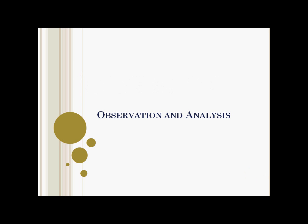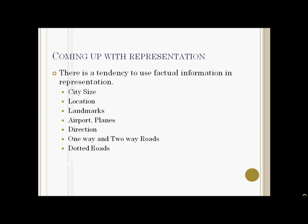To test our hypothesis, we conducted some experiments at a local school. We picked a random sample of 12 students — 6 from grade 5 and 6 from grade 6 — and asked them to represent some cities and flights between them in a diagram. Everyone came up with this representation. The representations were quite interesting. The students showed a tendency to use factual information like city size, location, landmarks, airports, planes, and directions in their representations.